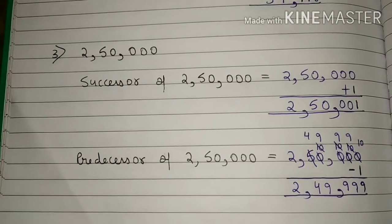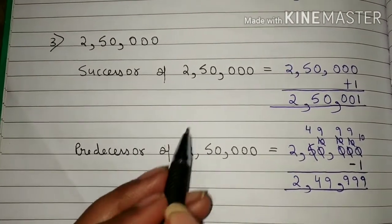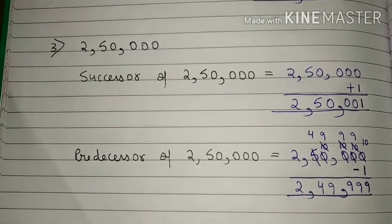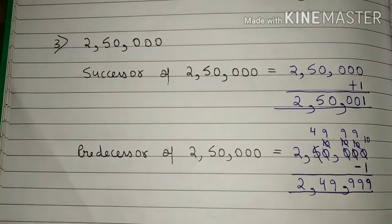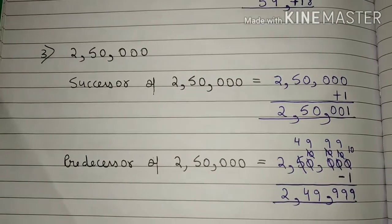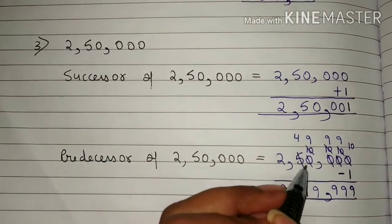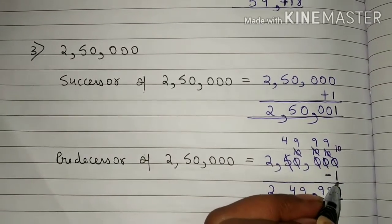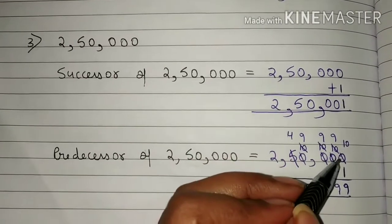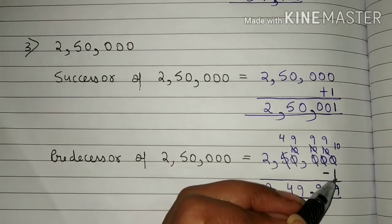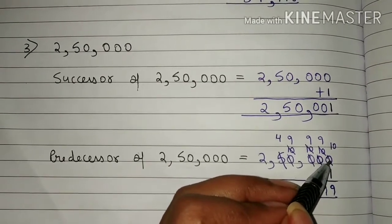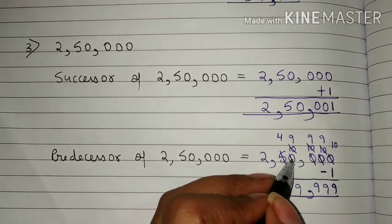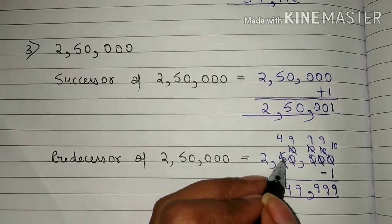Now you will write the predecessor of 25,00,000. For predecessor, you have to subtract 1 from the number. So write 25,00,000 minus 1. Now, 0 is less than 1, so you will borrow 1 from 5. This digit becomes 10, and the 5 becomes 4.